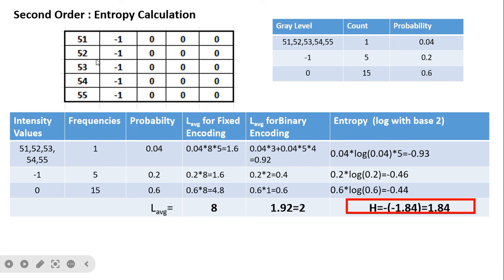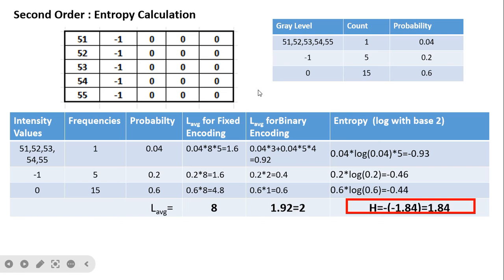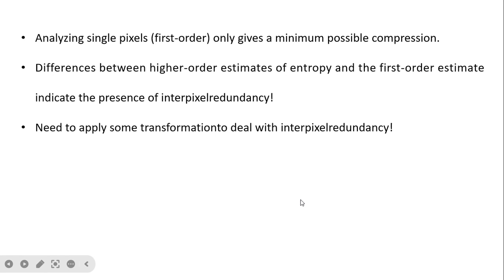When both redundancies are present in an image, we first capture inter-pixel redundancy and then apply coding redundancy reduction. Analyzing first-order entropy alone gives a minimum possible compression estimate. The difference between higher-order and first-order entropy estimates indicates the presence of inter-pixel redundancy, and we need to apply some transformation to deal with that inter-pixel redundancy.